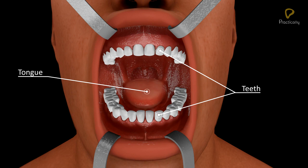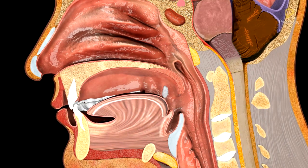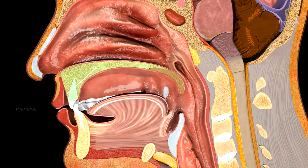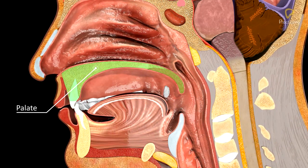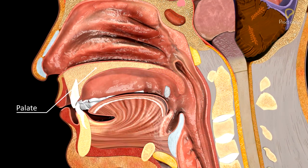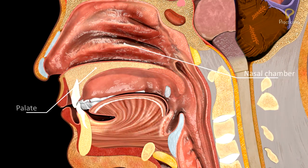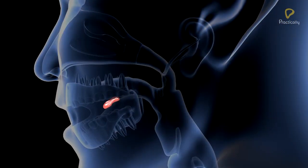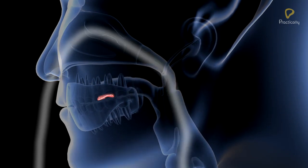The buccal cavity is a large space lined by stratified squamous epithelium. The teeth and tongue are located in this cavity. The roof of the buccal cavity is formed by the palate, which separates the buccal cavity from the nasal chamber, facilitating simultaneous chewing and breathing.